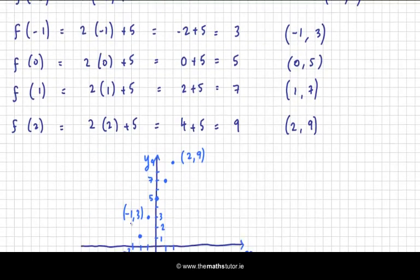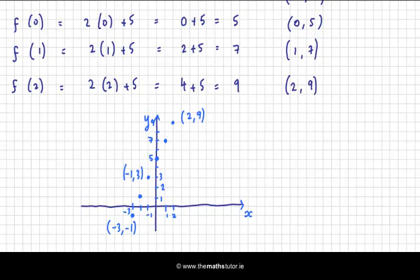Now I'm going to plot this graph by joining up these dots. So there's my line. I've joined up the points. Now a linear function will always give you a straight line. That's why it's called a linear function. So any function of the form ax plus b will give you a straight line.